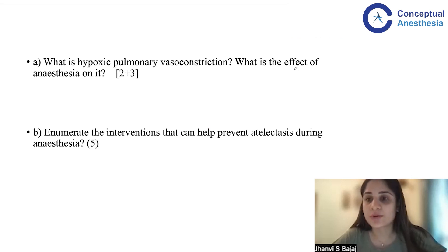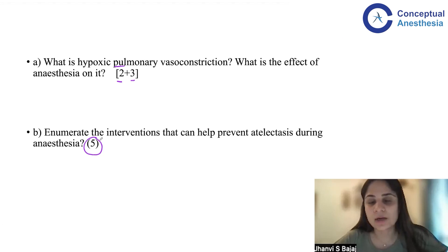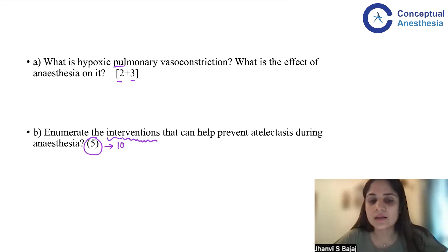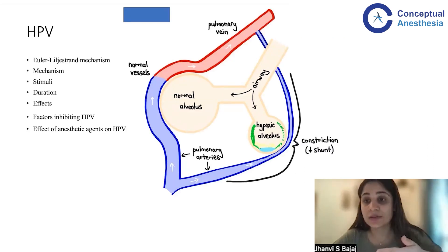The first question in Paper 1 asks: What is hypoxic pulmonary vasoconstriction, and what is the effect of anesthesia on HPV? The marks breakdown is two marks for defining HPV and three marks for the effect of anesthesia on it. The second part asks to enumerate interventions that help prevent atelectasis during anesthesia, for five marks. For a five-mark question like this, I know I should write about eight to ten interventions, roughly half a mark per point — even just writing the headings will show the examiner you know the answer.